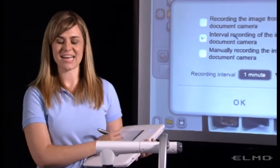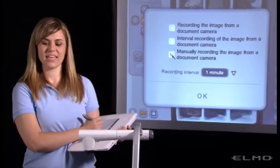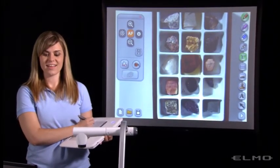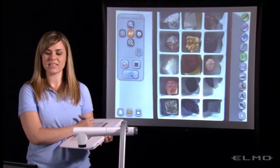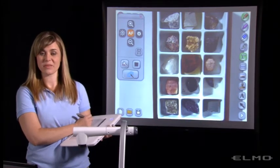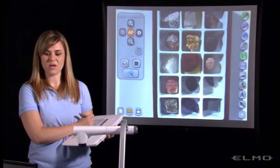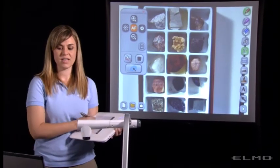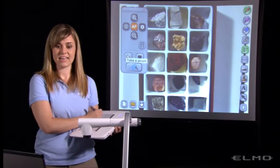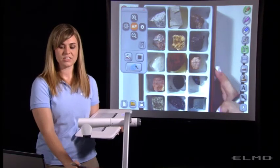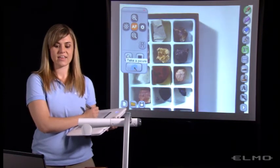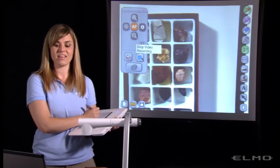The last option in our recording window is animation. When we click here and press OK we can start a recording and then manually capture the images by pressing this take picture button. So I'll capture an image, then I can reposition my object, take another picture, change the position again, take a final picture, and then stop the recording.